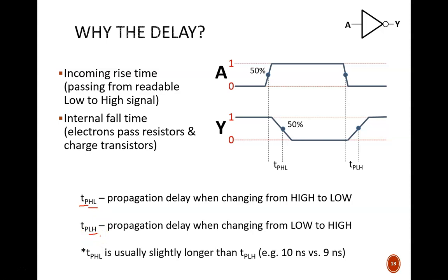These are measured from the 50% point of the changing input limb to the 50% point of the resulting output limb. TPHL is usually longer than TPLH by a small amount. You can read both of these switching characteristics straight from datasheets.